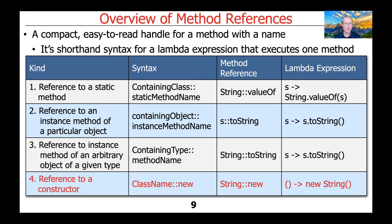The fourth and final type of method reference is a reference to a constructor, commonly known as a constructor reference — it's just another variant of a method reference that refers to a constructor. In this case, we have the name of the class::new. So a good example might be String::new, which is a constructor reference that will make a string when it's executed. The corresponding Lambda expression might be () -> new String().